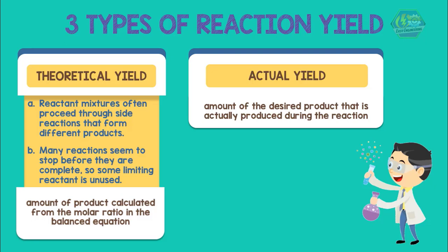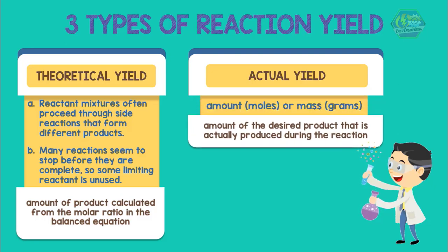Theoretical and actual yields are expressed in units of amount (moles) or mass (grams). The third type of reaction yield is percent yield.